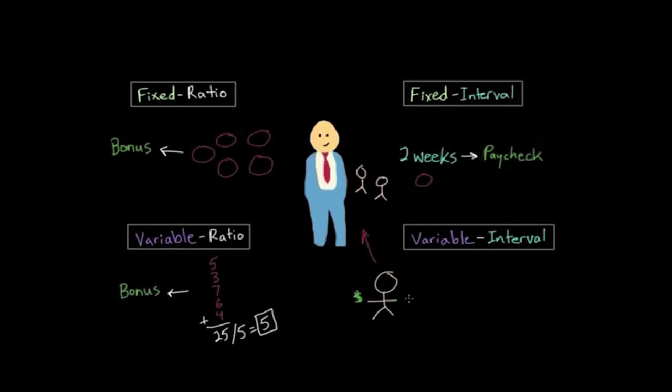So those are the four types of partial reinforcement schedules. And as you might imagine, each one has a tendency to emit a different pattern of response.